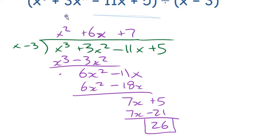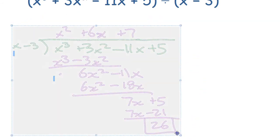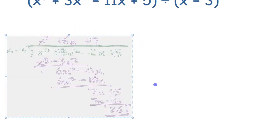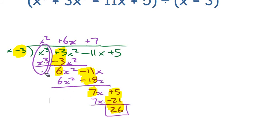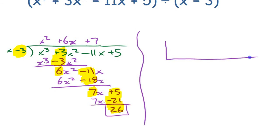Now let's compare synthetic division. The thing that matters after every step are these coefficients — what each subtraction gives you. The important thing in the divisor is this number, because that's what creates the next number every time. The first term cancels out every single time, so you don't need to worry about it. Synthetic division sets things up differently — you only focus on the coefficients of the terms, not what power of x it is.